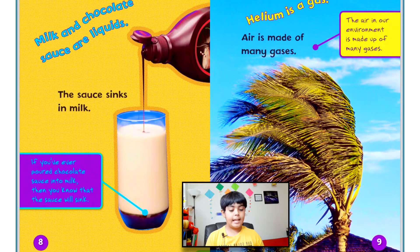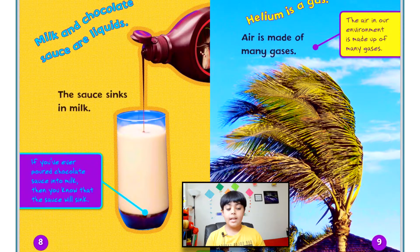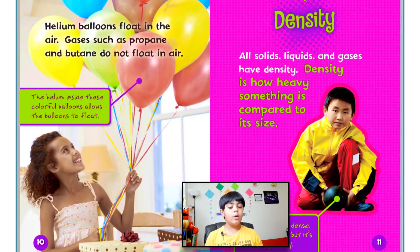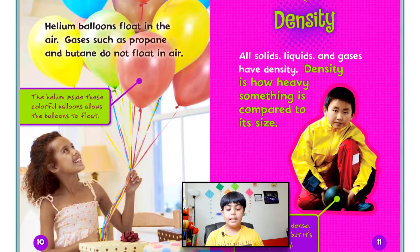Helium is a gas. Air is made up of many gases. The air in our environment is made up of many gases. Helium balloons float in the air. Gases such as propane and butane do not float in air. The helium inside these colorful balloons allows the balloons to float.